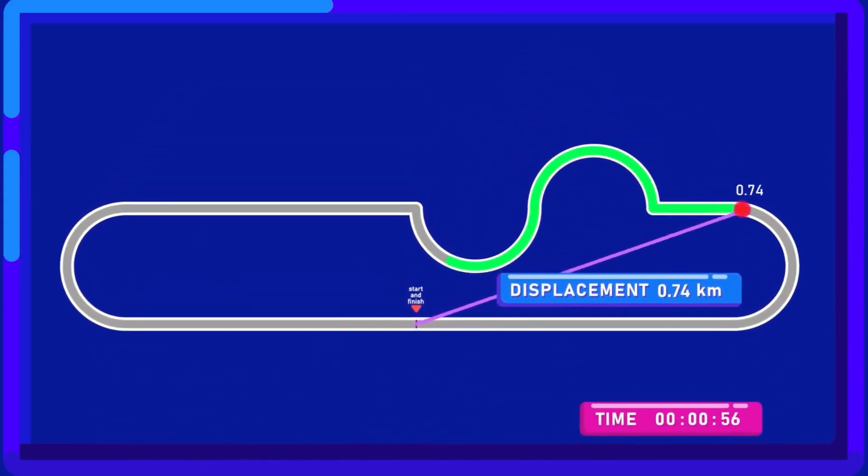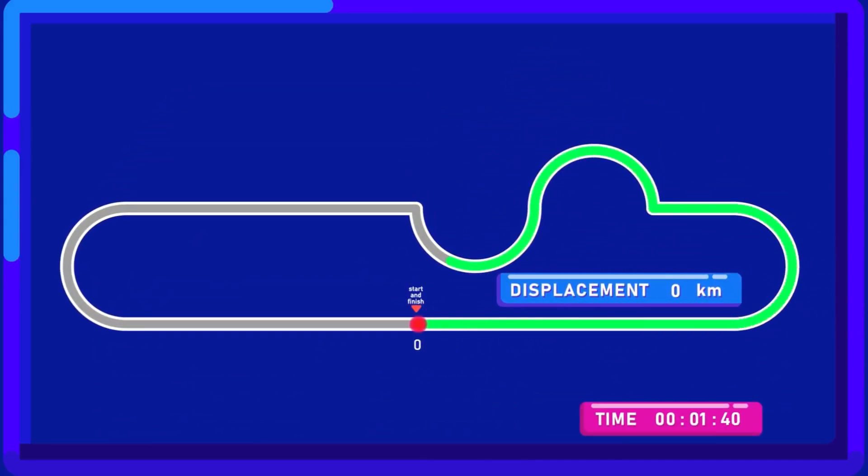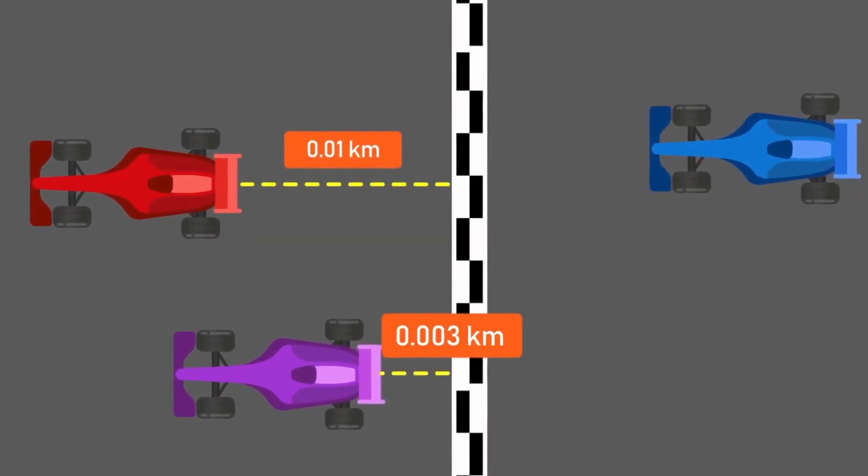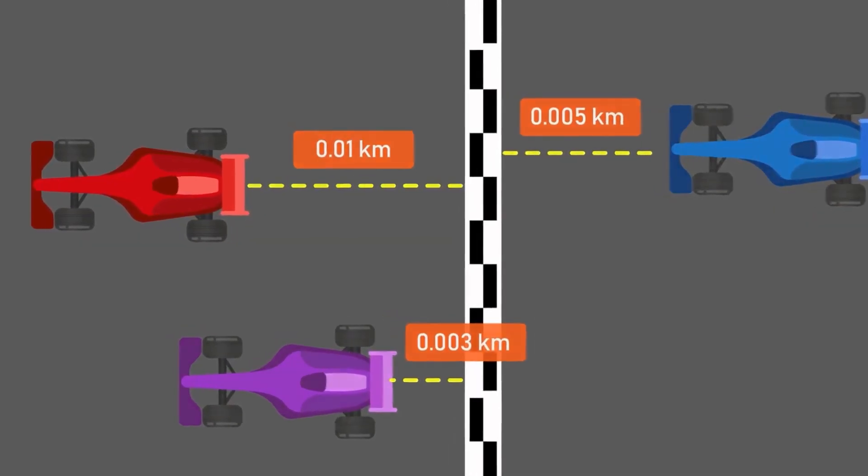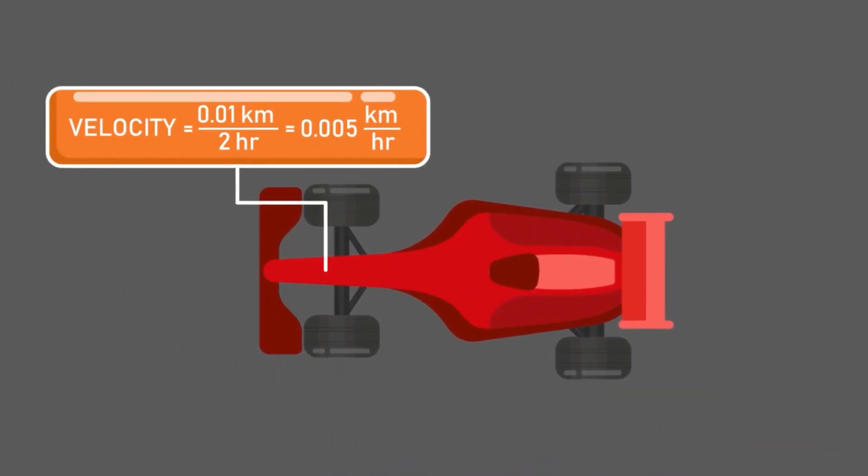But as the drivers return to the initial place where they cross the finish line, their displacement is nearly zero, because it is close to the same point as they start the race. Thus, their average velocity is also negligible compared to their average speed.